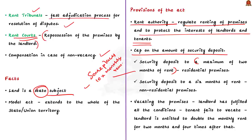Another crucial provision concerns vacating of premises. The Model Tenancy Act says that if a landlord has fulfilled all conditions stated in the rent agreement — like giving notice — and the tenant fails to vacate on the expiration or termination of tenancy, the landlord is entitled to double the monthly rent for two months and four times the rent after that.